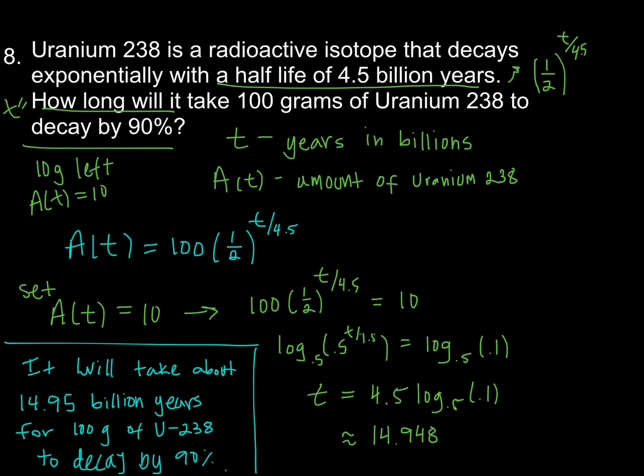All right, last but not least, we're dealing with uranium-238. It is a radioactive isotope, and it decays exponentially. It takes forever, though. It has a half-life of 4.5 billion years. So interpreting this, that means that every 4.5 billion years, I'm going to multiply the amount I have by one-half. So I can visualize the way that will look exponentially. It'll be a base of one-half, and my exponent will need to increase by one every time the value of t increases by 4.5 billion years. It looks something like that.